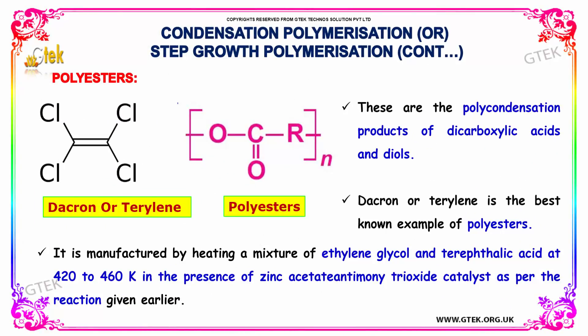Polyesters are polycondensation products of dicarboxylic acids and diols. Dacron or Terylene is the best known example of polyesters. It is manufactured by heating a mixture of ethylene glycol and terephthalic acid at 420 to 460 kelvin, in the presence of zinc acetate and antimony trioxide catalyst, as per the reaction given earlier.